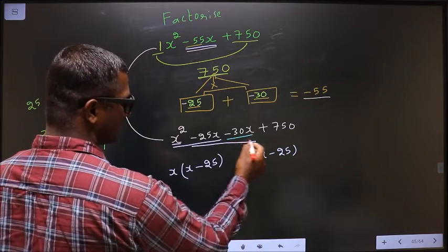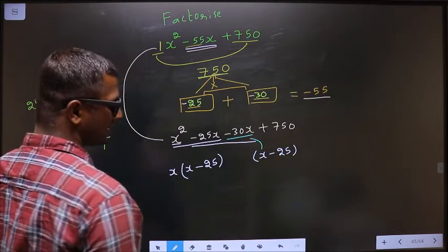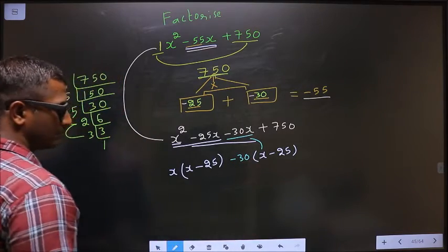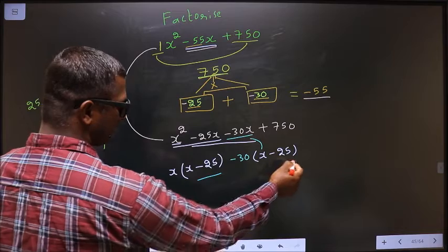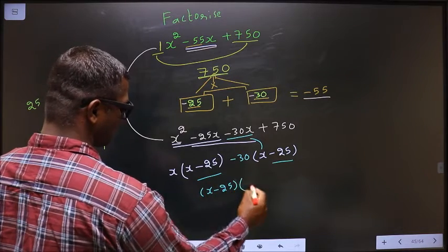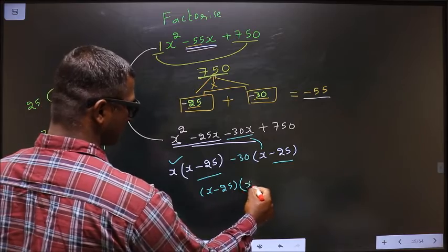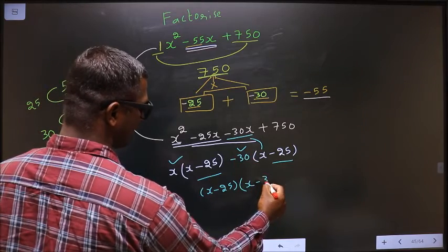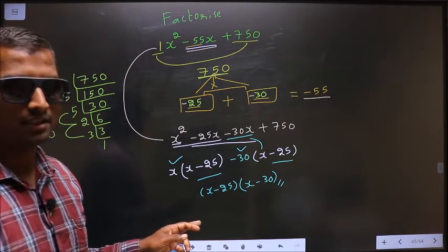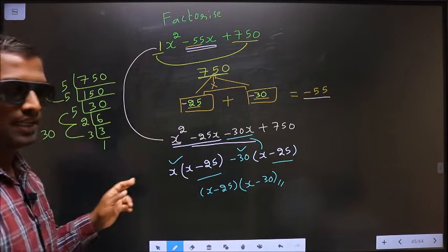So now from -30x, x is gone inside, so outside you get -30. Now take (x - 25) common. So here I get x and here I get -30. This is our answer.